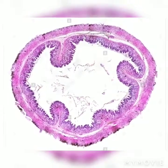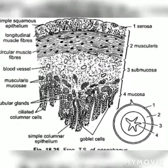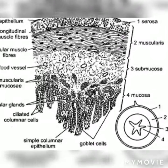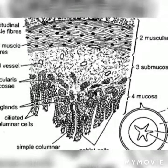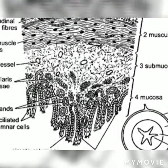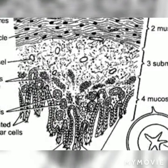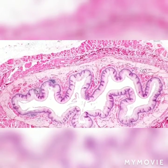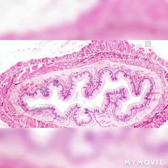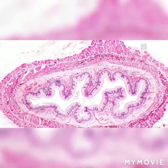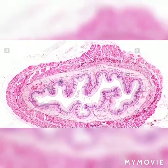The sub-serosa consists of a thin layer of connective tissue. The sub-mucosa lies below the circular muscle fibers and is made up of loose connective tissue. The mucosa is the innermost layer and consists of simple columnar epithelium. The tubular gastric glands open into the lumen of the stomach through a narrow duct and secrete pepsin and hydrochloric acid.